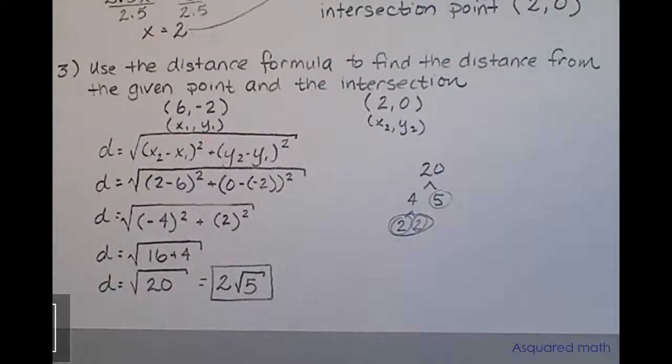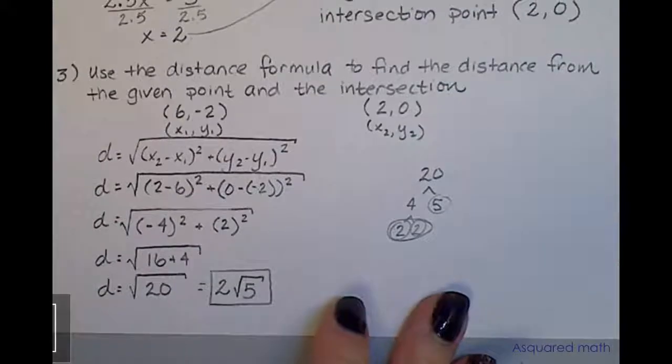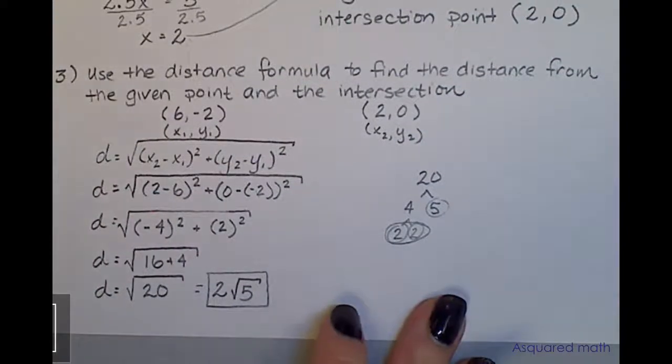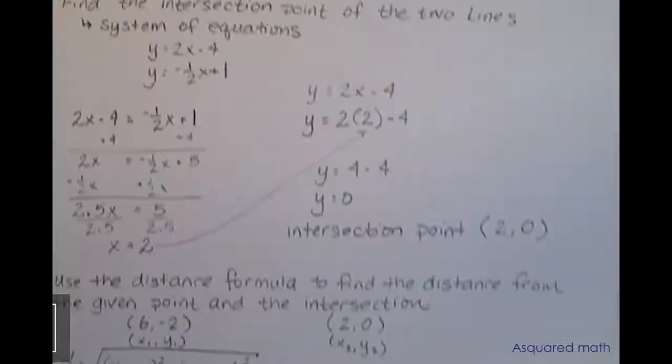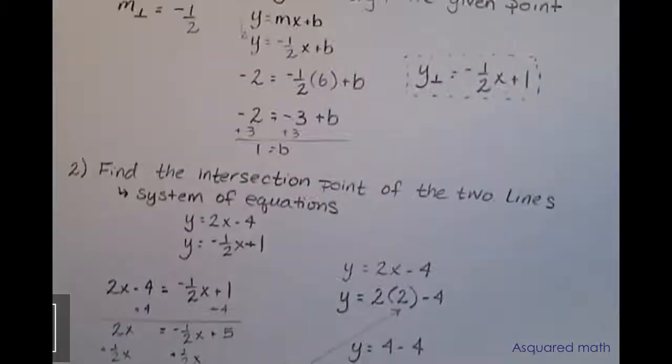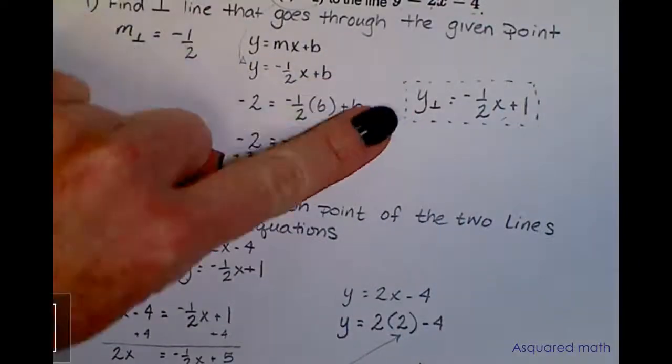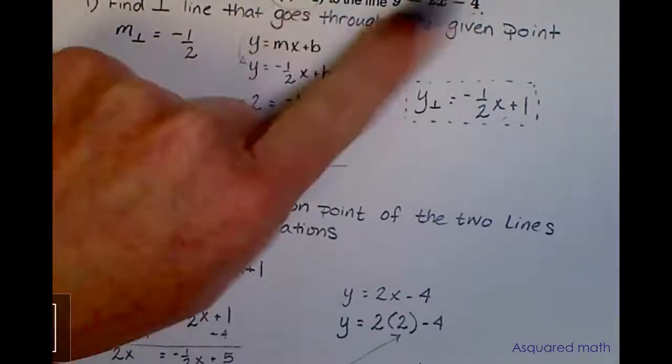So that completes this entire chapter. We finished off with finding that distance from a point to a line. Just to recap, first you have to find that equation to the perpendicular that goes through that given point.